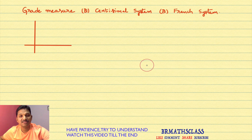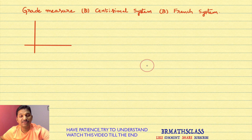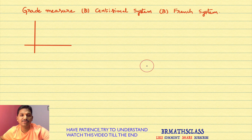In the first class, we learned what is an angle, what is a positive angle, and what is a negative angle. In the second class, we learned the measures of an angle. An angle can be measured in degrees, grades, or radians. In the second class, we learned about degree measure, which is also known as sexagesimal measure.